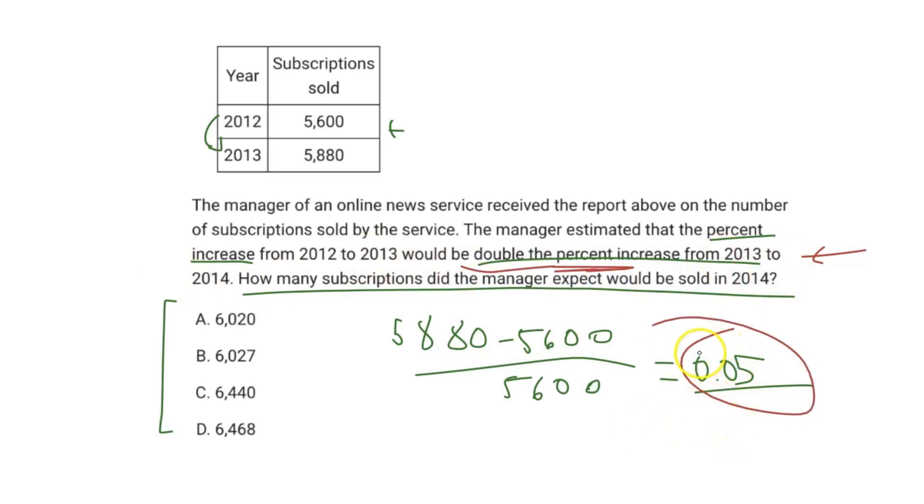So this number is going to be 0.025 or a 2.5% increase. Now we just need to apply a 2.5% increase to our 2013 value of 5,880.